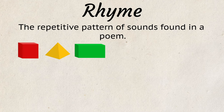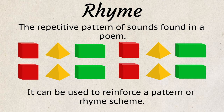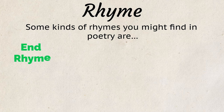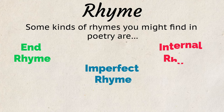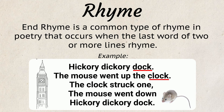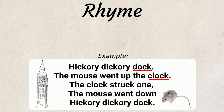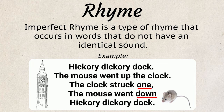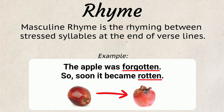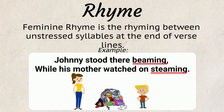Rhyme is the repetitive pattern of sounds found in a poem. It can be used to reinforce a pattern or rhyme scheme. Some kinds of rhymes you might find in poetry are end rhyme, imperfect rhyme, internal rhyme, masculine rhyme, and feminine rhyme. End rhyme occurs when the last word of two or more lines rhyme. Imperfect rhyme occurs in words that do not have an identical sound. Internal rhyme occurs in the middle of lines in poetry. Masculine rhyme is the rhyming between stressed syllables at the end of verse lines. Feminine rhyme is the rhyming between unstressed syllables at the end of verse lines.